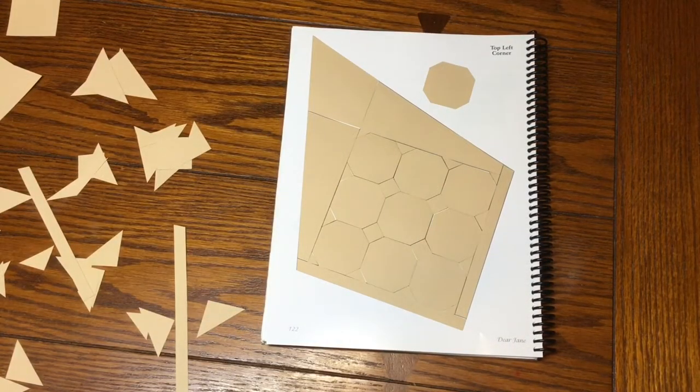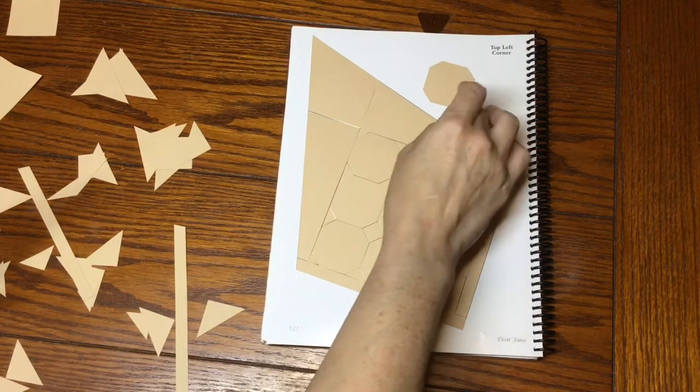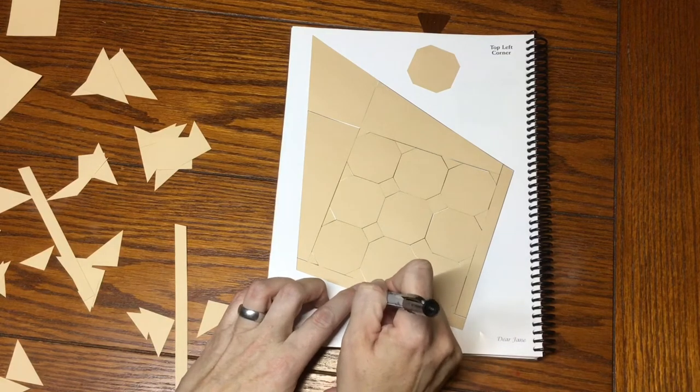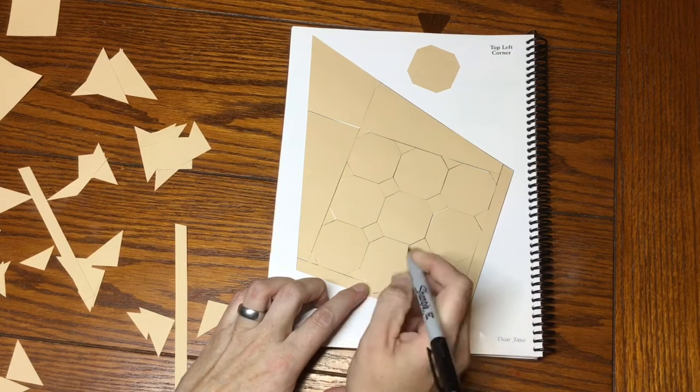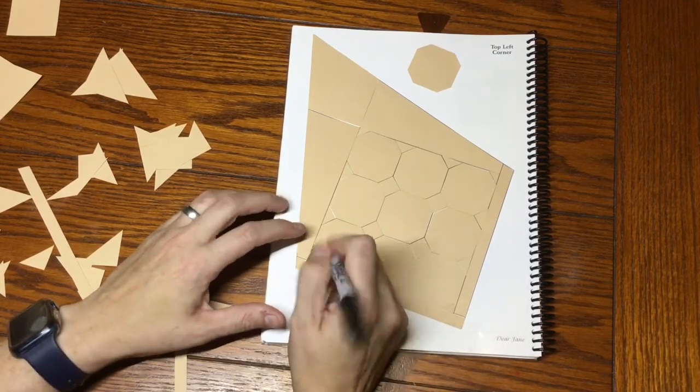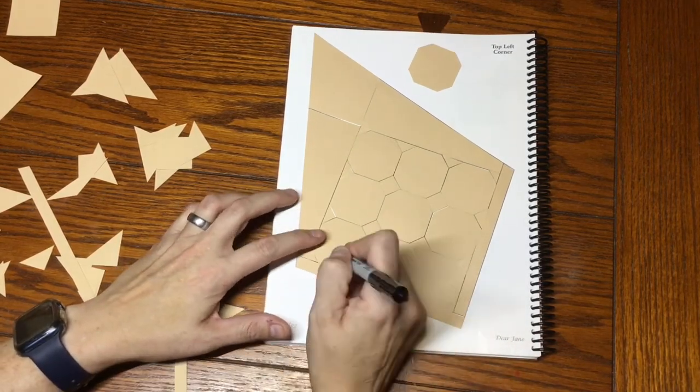So I've got my pieces laid out. This is an applique for this section here, and I'm going to label these TL for top left. And we've got these little teeny tiny things going on here.